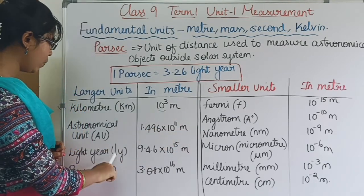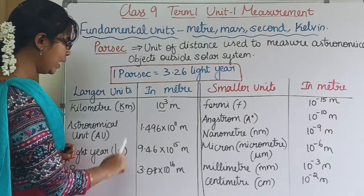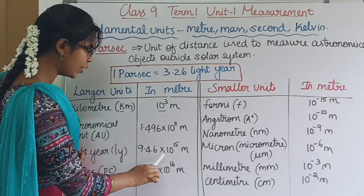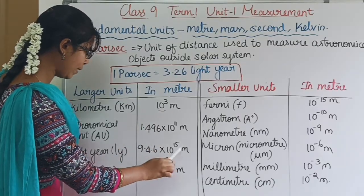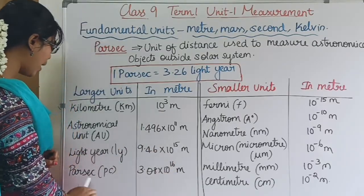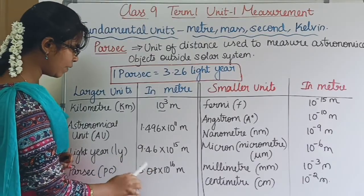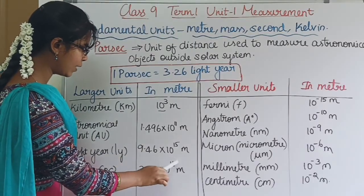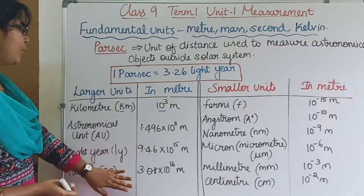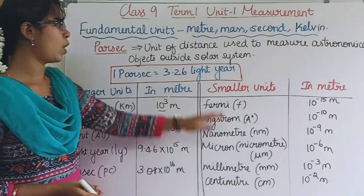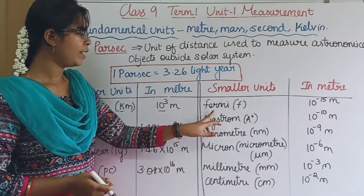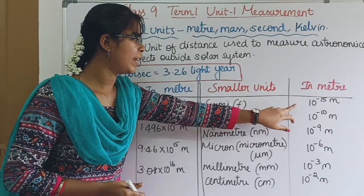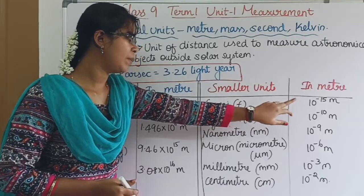Next, light year, symbol ly: this value in meters is 9.46 × 10 power 15 meters. Parsec, symbol pc: this value in meters is 3.08 × 10 power 16 meters. Now for smaller units — femtometer, symbol f: this value is 10 power minus 15 meters.